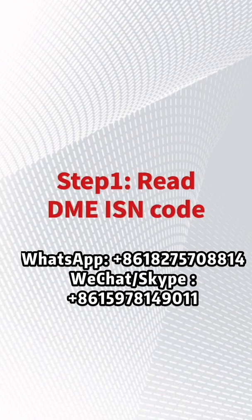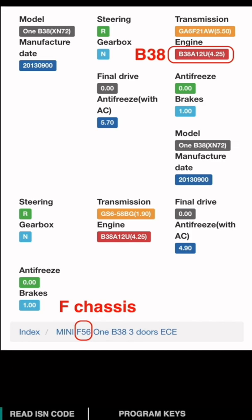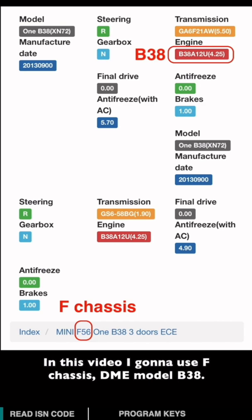First step: read the DNE ISN code. Create the basic information of the vehicle according to the VRN number. In this video, I'm going to use F chassis, DNE model B3A.